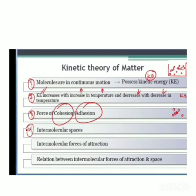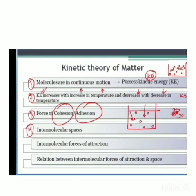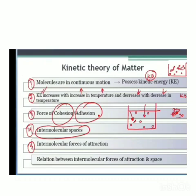The next point of kinetic theory states that molecules have a certain amount of space between them. For example, in a container with a liquid, you can observe that there is certain space between the molecules, and this space is known as intermolecular space. The attractive forces between similar kinds of molecules and different kinds of molecules are referred to as cohesion and adhesion, and are collectively known as intermolecular forces of attraction.